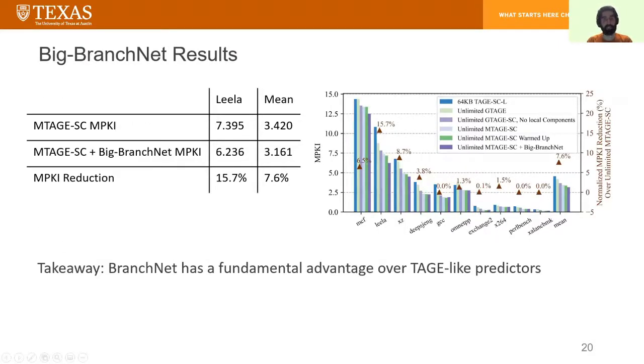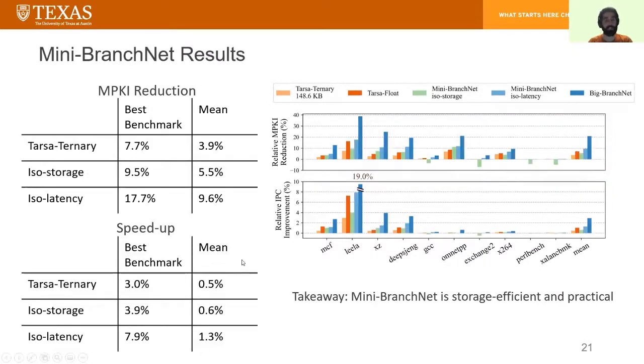To evaluate the effectiveness of BranchNet without restricting ourselves due to storage and latency, we compared a big variant of BranchNet to MPPHSC, which is the winner of 2016 branch prediction championship in the unlimitedly sized category. Our results show that big BranchNet, even compared to MPPHSC, achieves 7.6% MPKI reduction on average, up to 15.7% MPKI reduction for our best benchmark. These results show that BranchNet has a fundamental advantage over TAGE-like predictors, and we cannot simply get the same benefits by adding more storage to TAGE. In our practical evaluation, we use two configurations for BranchNet.